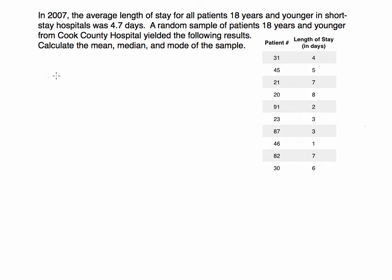In this video I'd like to go over some examples of calculating the mean, the median, and the mode. We are told that in 2007 the average length of stay for all patients 18 years and younger in short-stay hospitals was 4.7 days. It looks like we have a random sample of patients 18 years and younger from a particular hospital and these are the results that we got.